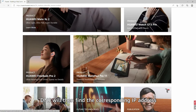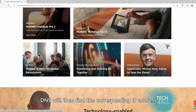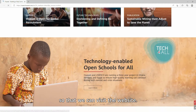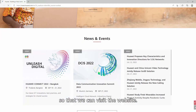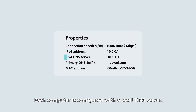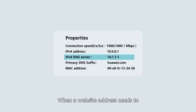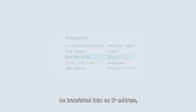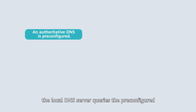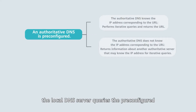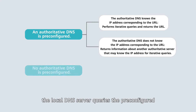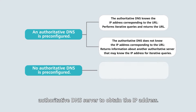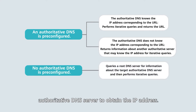DNS will then find the corresponding IP address so that we can visit the website. Each computer is configured with a local DNS server. When a website address needs to be translated into an IP address, the local DNS server queries the pre-configured authoritative DNS server to obtain the IP address.